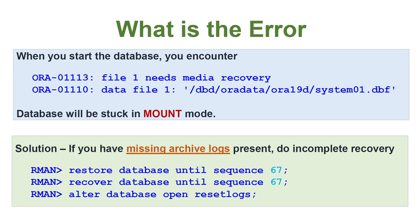When you try to start the database you might encounter the error 'file one needs media recovery,' and it will give you the name of the file. In this case it is the system datafile, but as mentioned it can be any datafile. The database will be stuck in mount mode and you will not be able to get it into open mode unless you fix this error. Since you have missing archive blocks, you will not be able to do a complete recovery.